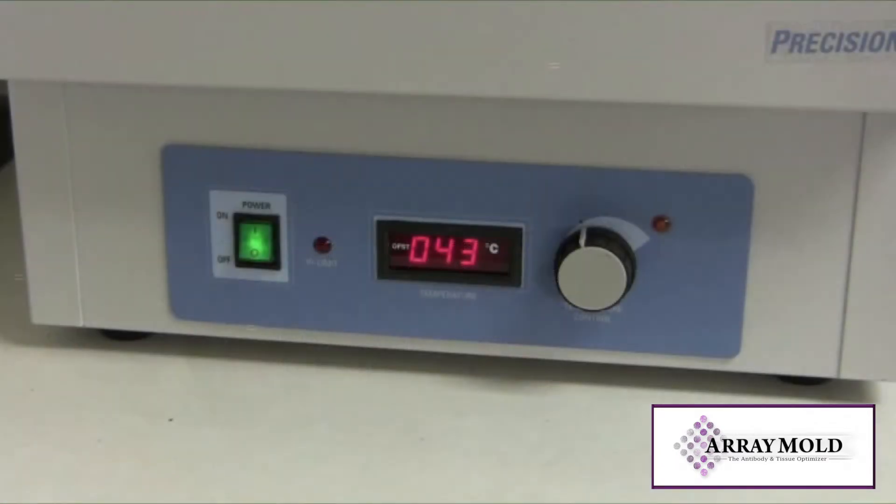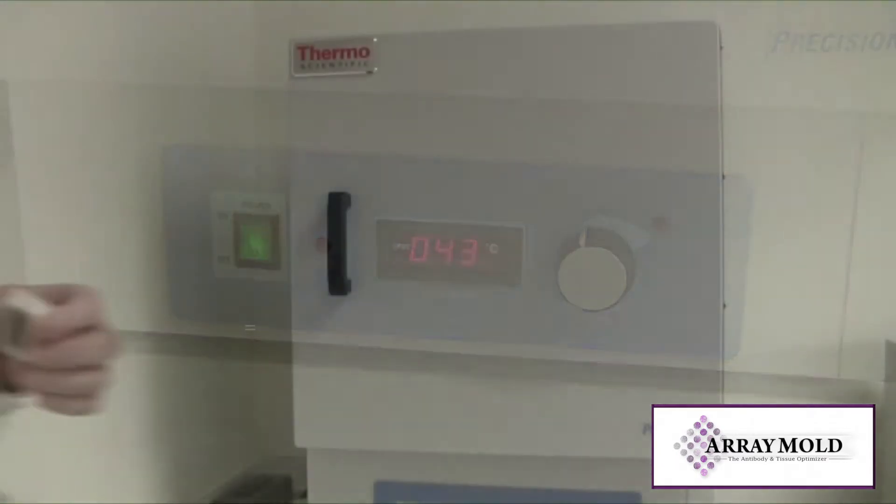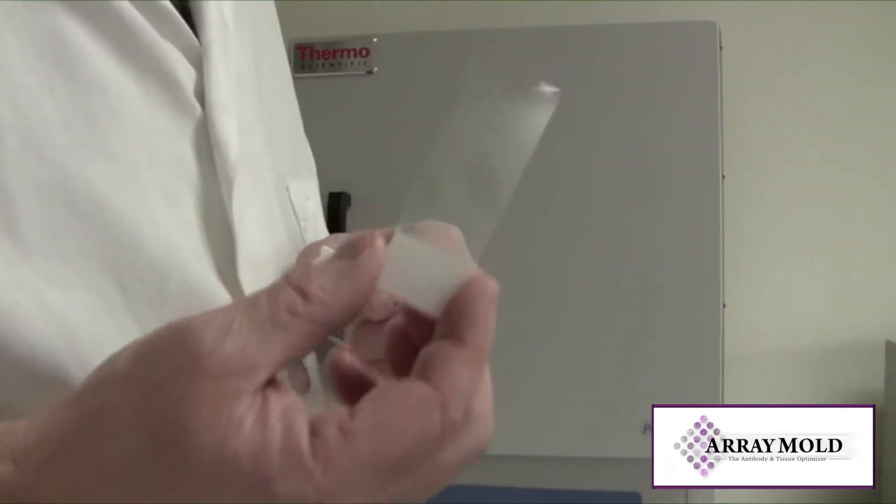Warm an oven to around 43 degrees Celsius. Place the array block on a glass slide face down. It doesn't matter if it's a charged or non-charged slide.